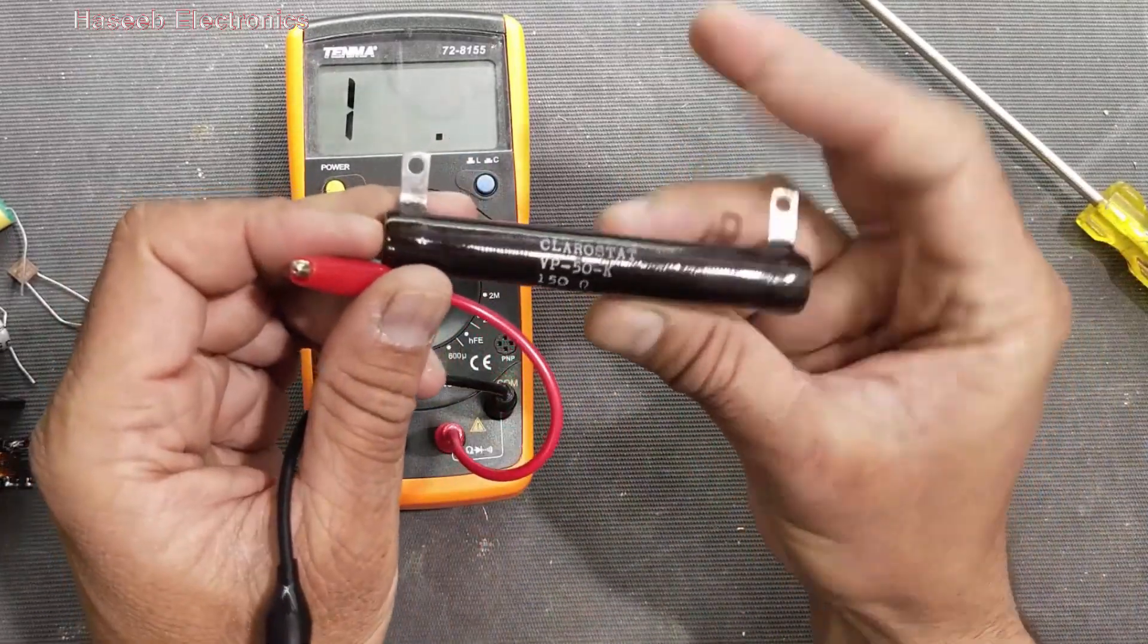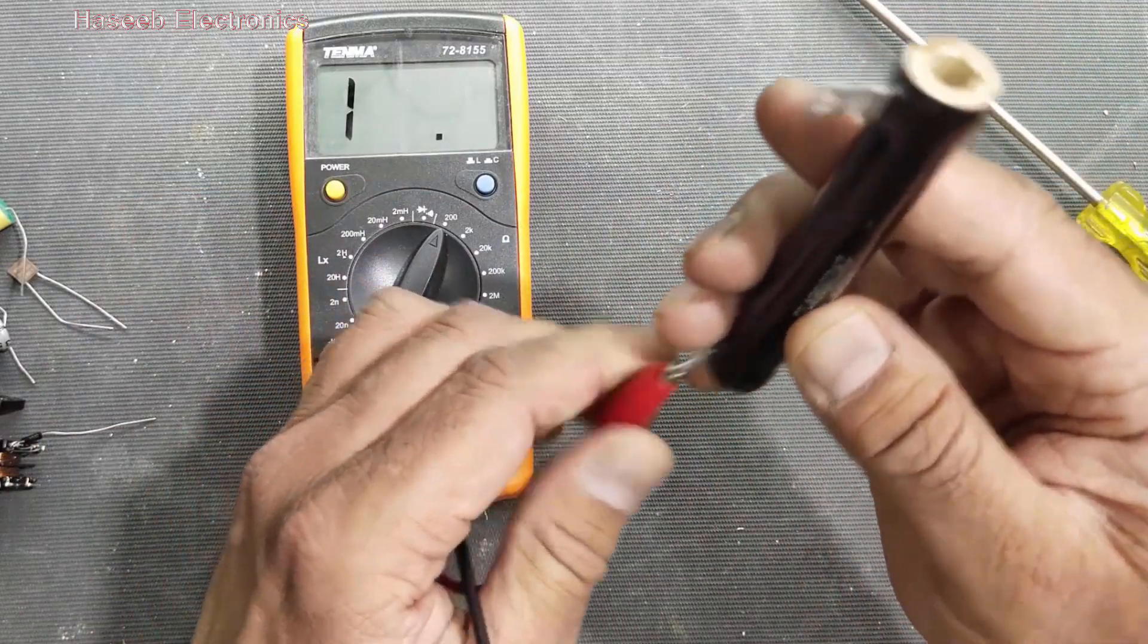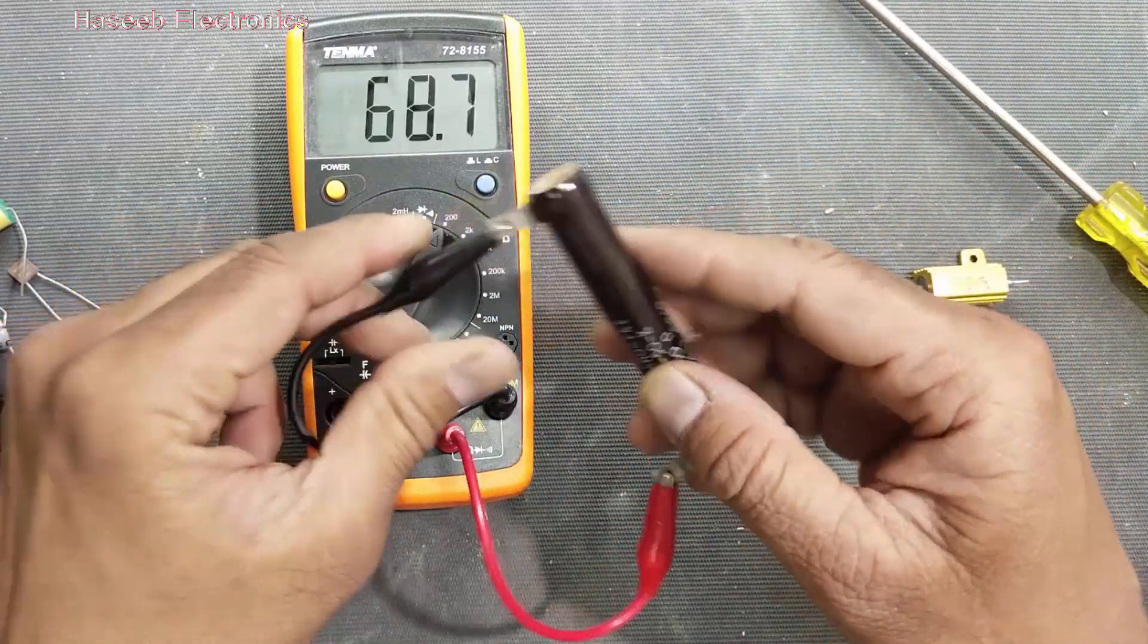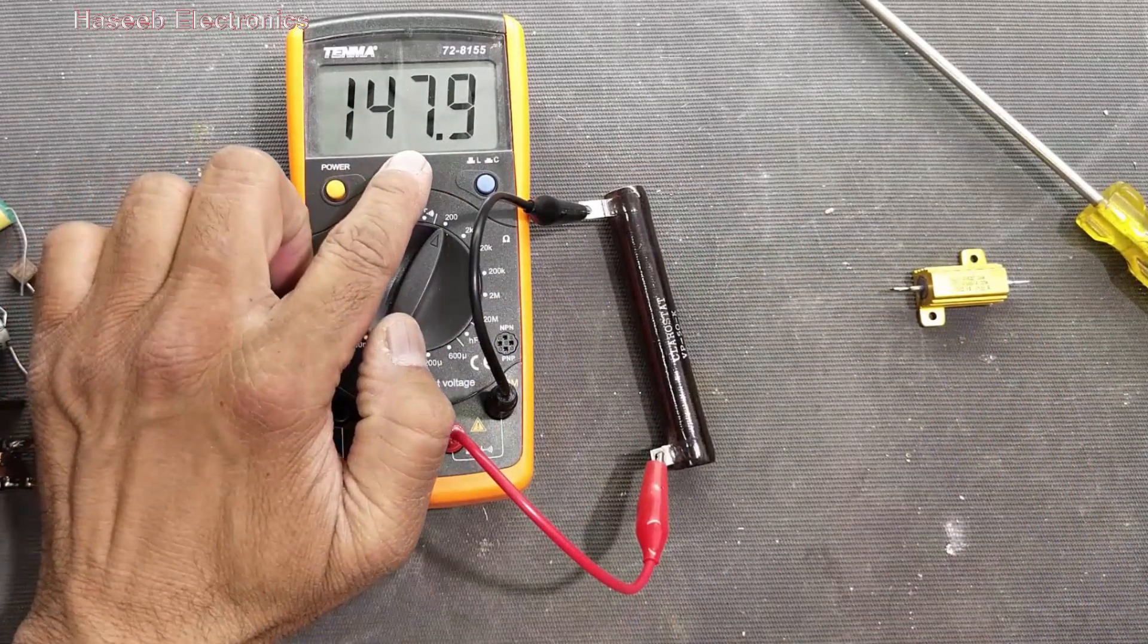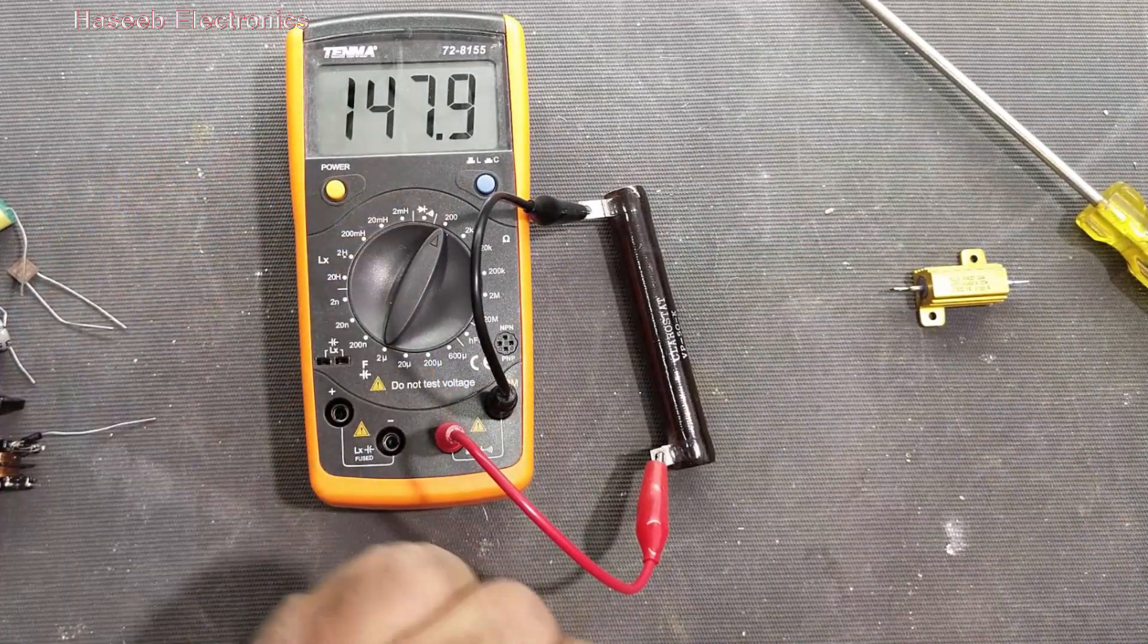Now I can select this 150 ohm resistance. It is wire wound resistance. So it is measuring 147.8 ohm resistance.